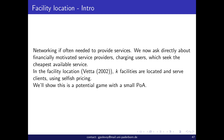We have looked at networking, and networking is often needed to provide services. Now we can also look at services in a more explicit way. What if you have financially motivated service providers — those are the agents — and they need to provide service to certain users, charge their users for the services, and the users seek the cheapest available service. We are looking at the facility location paper by Vetta from 2002.